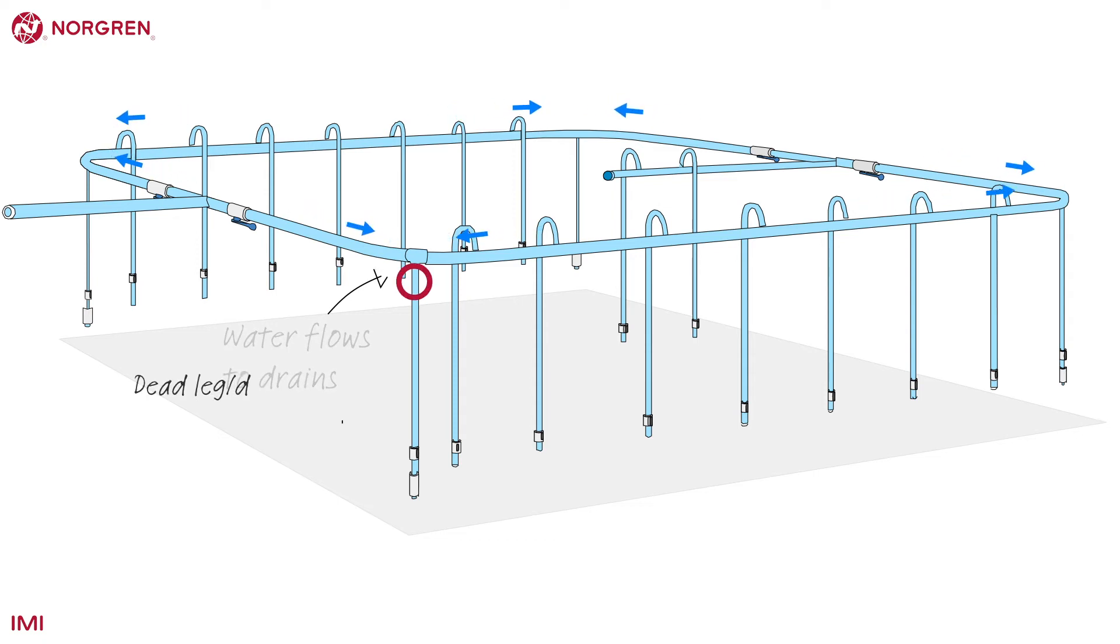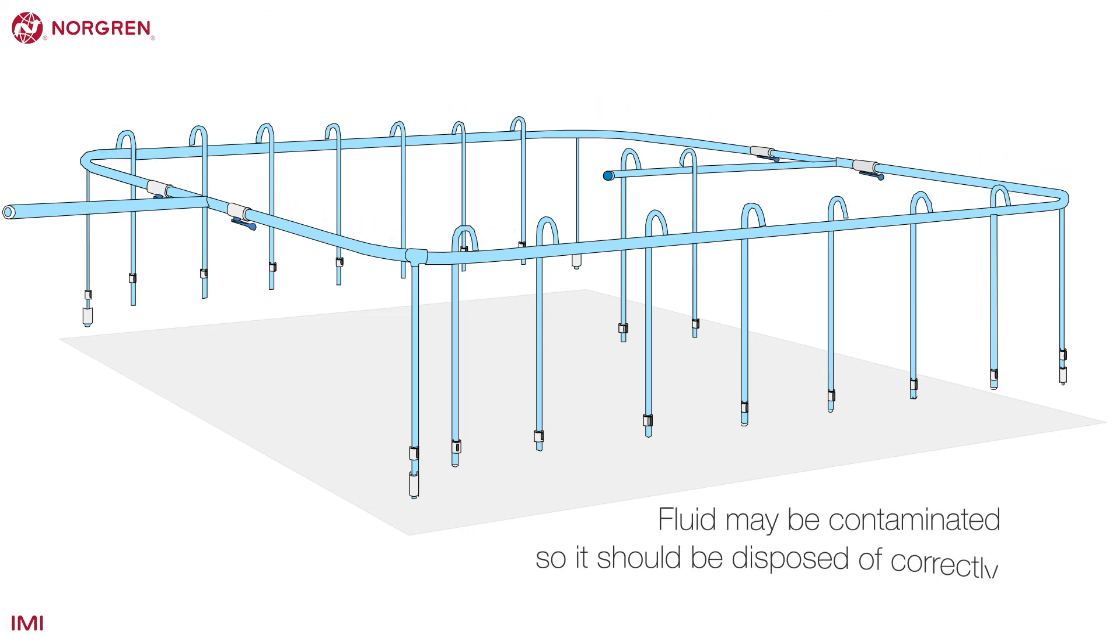IMI Norgren supply dead leg drains. These valves are below each corner and allow the fluid to be drained, and a shut-off valve should be included above them to allow for servicing. Fluid may be contaminated so it should be disposed of correctly.